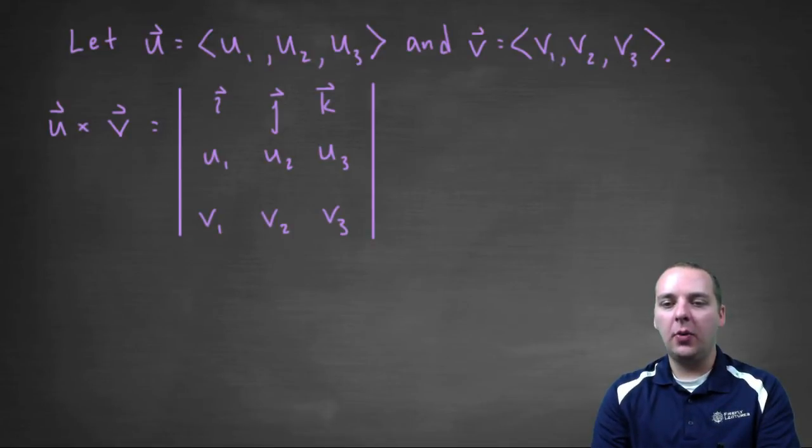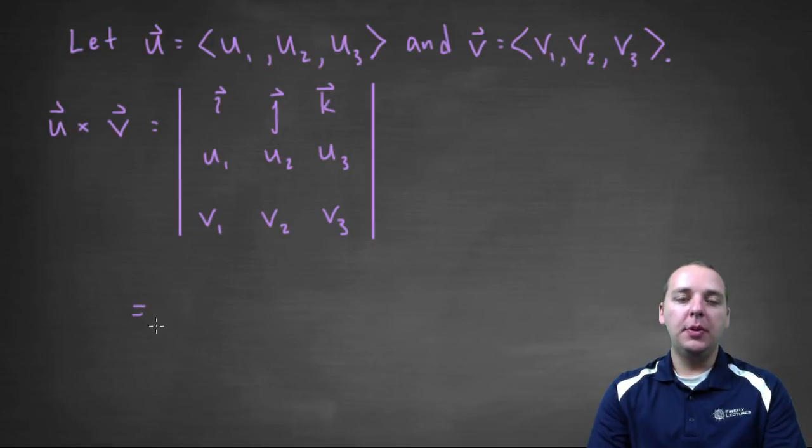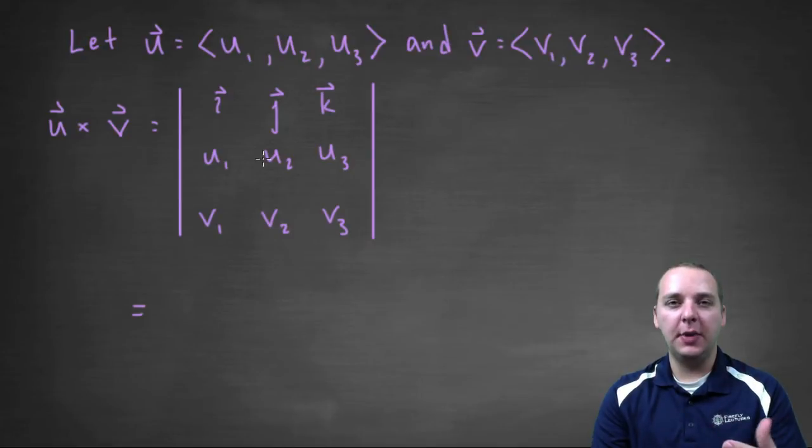I'll go ahead and write out what the next line would be. Most people do 3 by 3 determinants by hand using something called cofactor expansion, or expansion by minors, and that's what we're going to do as well.